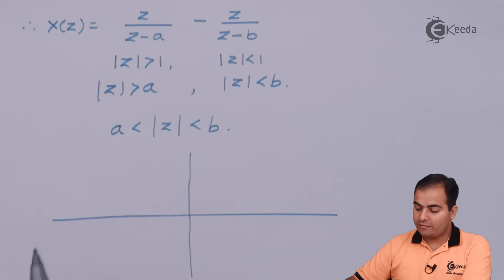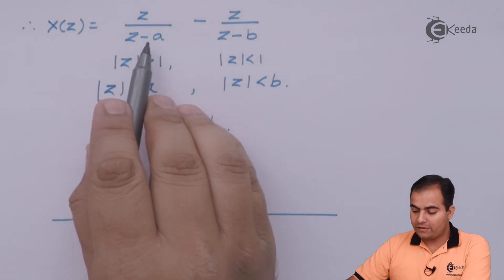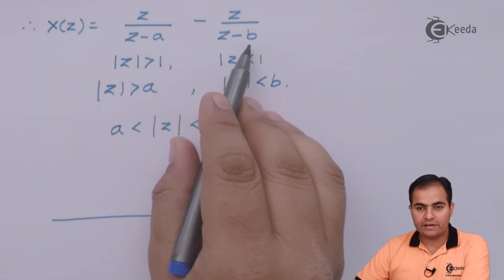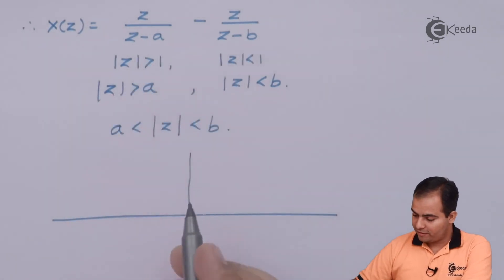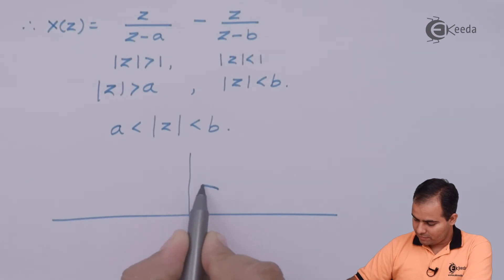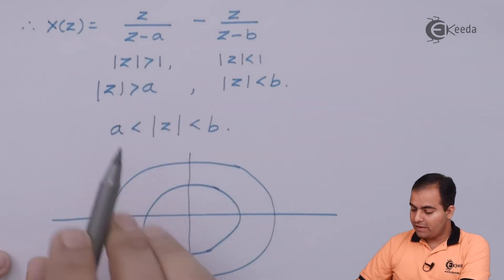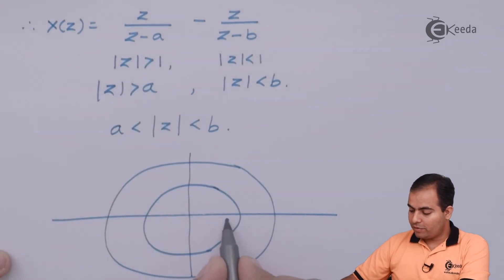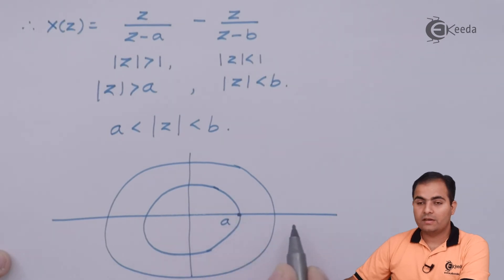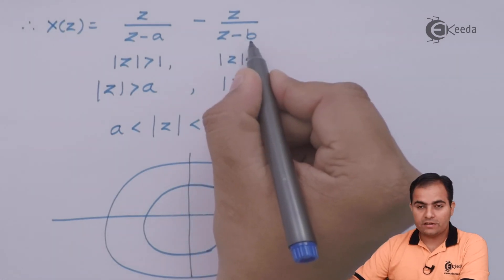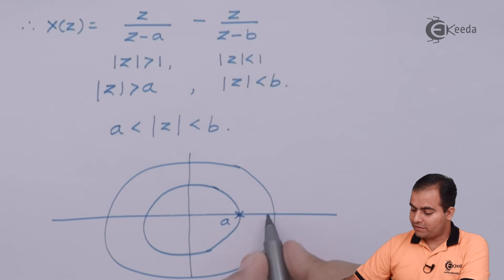We have two circles: one with radius A and one with radius B. The pole A is at one location and B at another, and the ROC is the region in between A and B — the annular region.